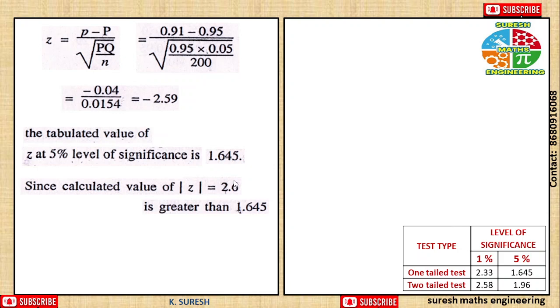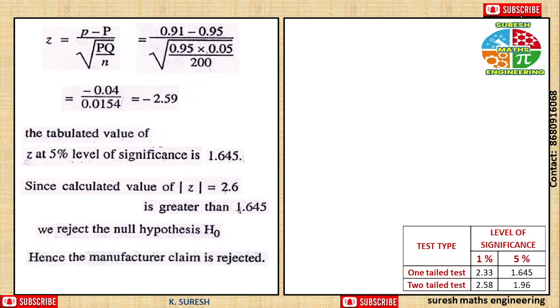The calculated value of 2.59 is greater than 1.645. When the calculated value is greater than the table value, we reject the null hypothesis. Hence, the manufacturer's claim is rejected.